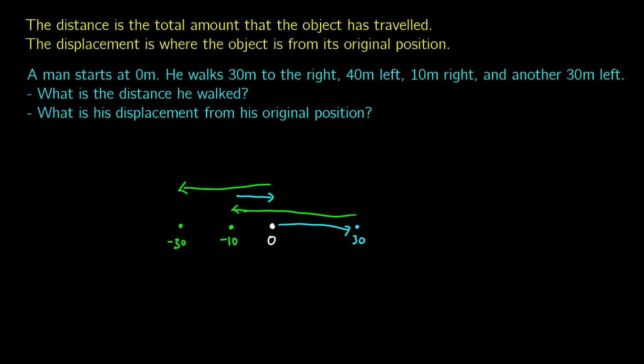What is the distance he walked, and what is his displacement from his original position? For distance, we're going to add up the amount he walked at each step. Notice how I'm taking the absolute values here. So distance is going to be 30 plus 40 plus 10 plus 30. That gives us 110 meters total.